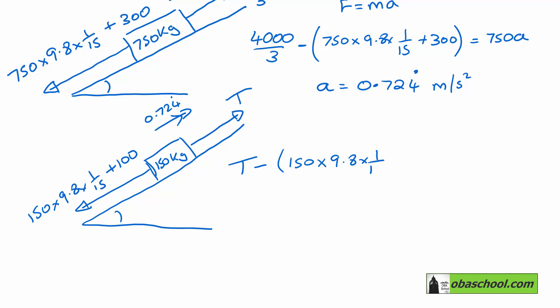And so T take away 150 times 9.8 times 1 over 15 plus 100 must be equal to the mass times the acceleration. And the only thing that we don't know there is the T. So it's just calculator work. And we get 306.6 recurring newtons.